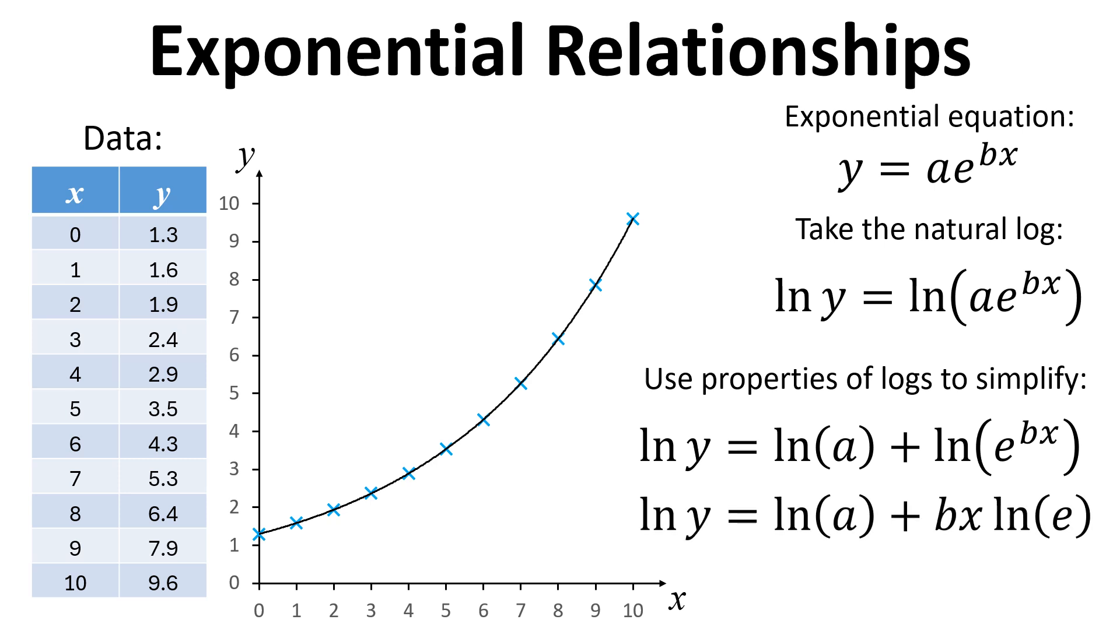We can also bring the bx out in front of the natural log, due to properties of logs. And because natural log of e is 1, we end up with this equation: natural log of y equals natural log of a plus bx. We're going to plot the data in this form now.